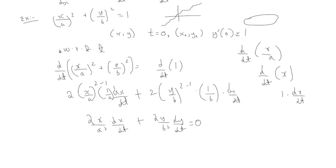As an alternate notation, dx/dt and dy/dt can be written as x'(t) and y'(t) — differentiable functions in terms of t. So an alternate form would use x'(t) and y'(t). I want to find x'(t), so let's take everything to the right-hand side.